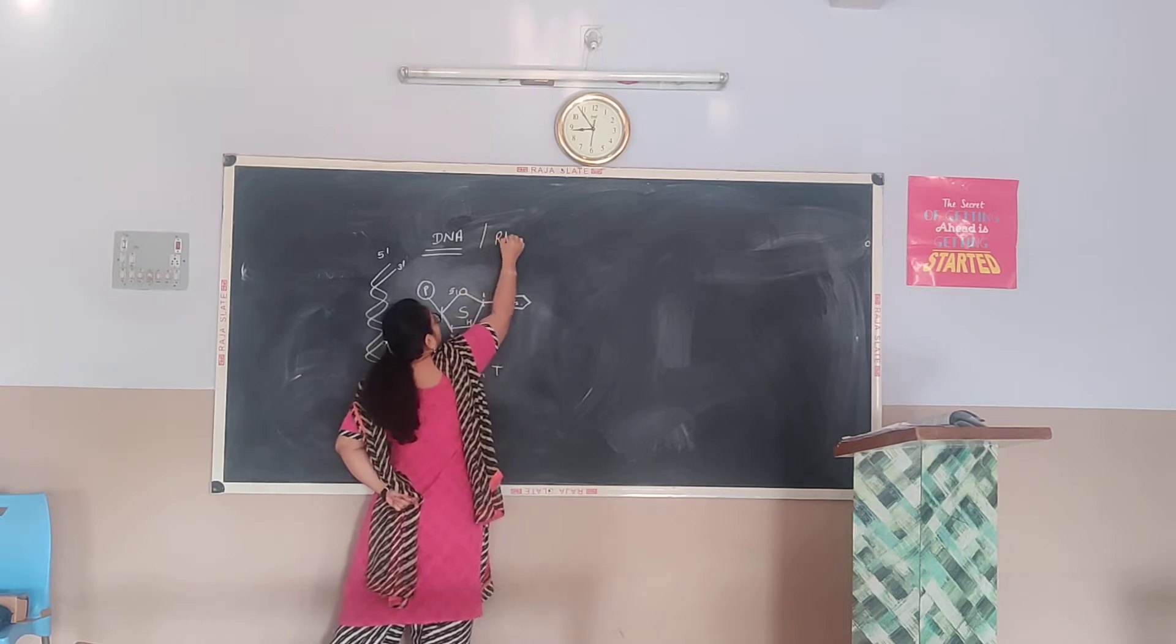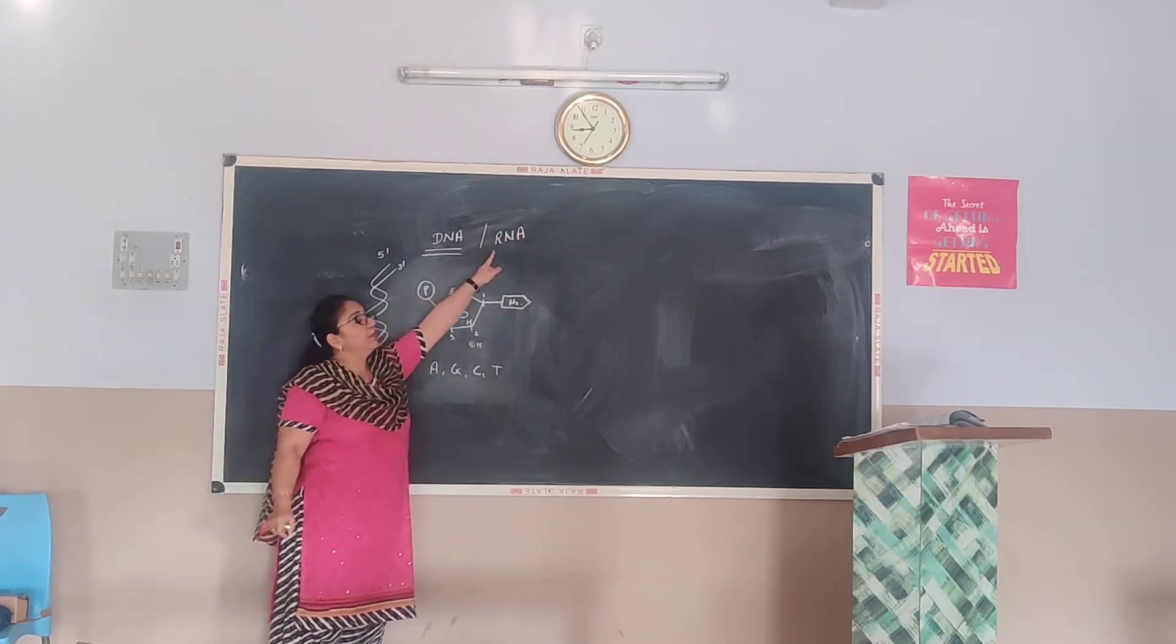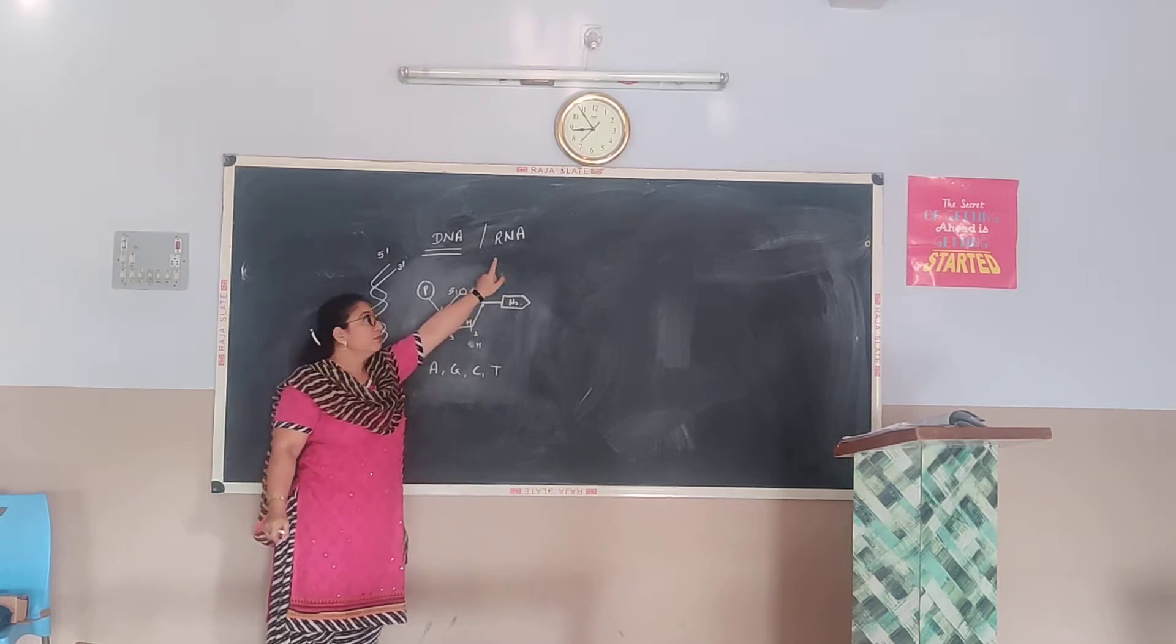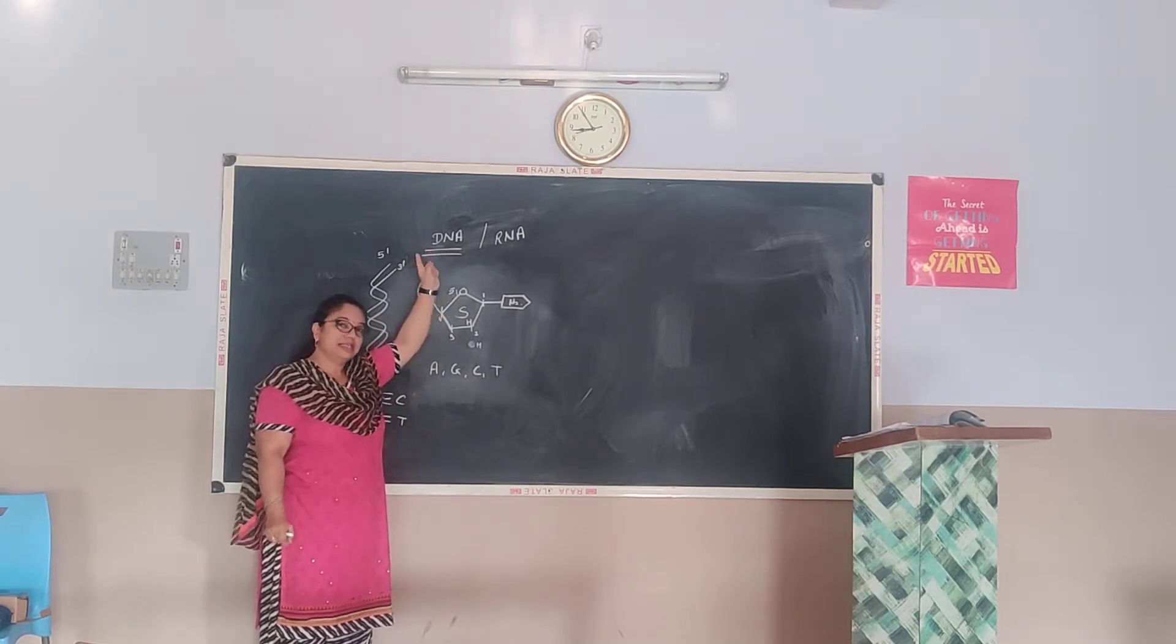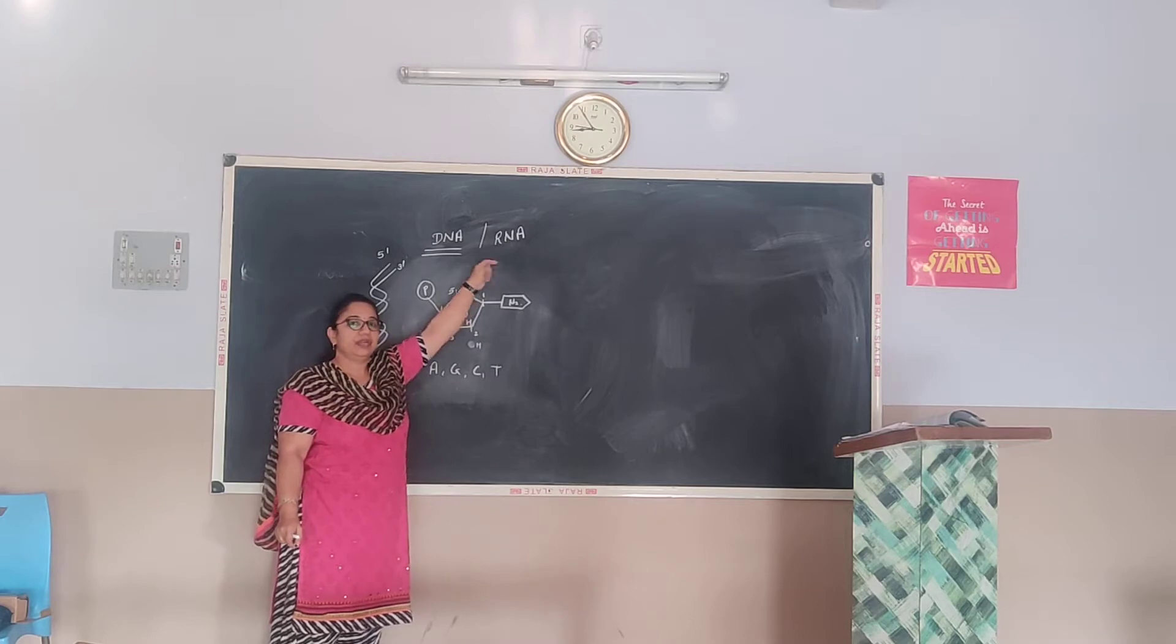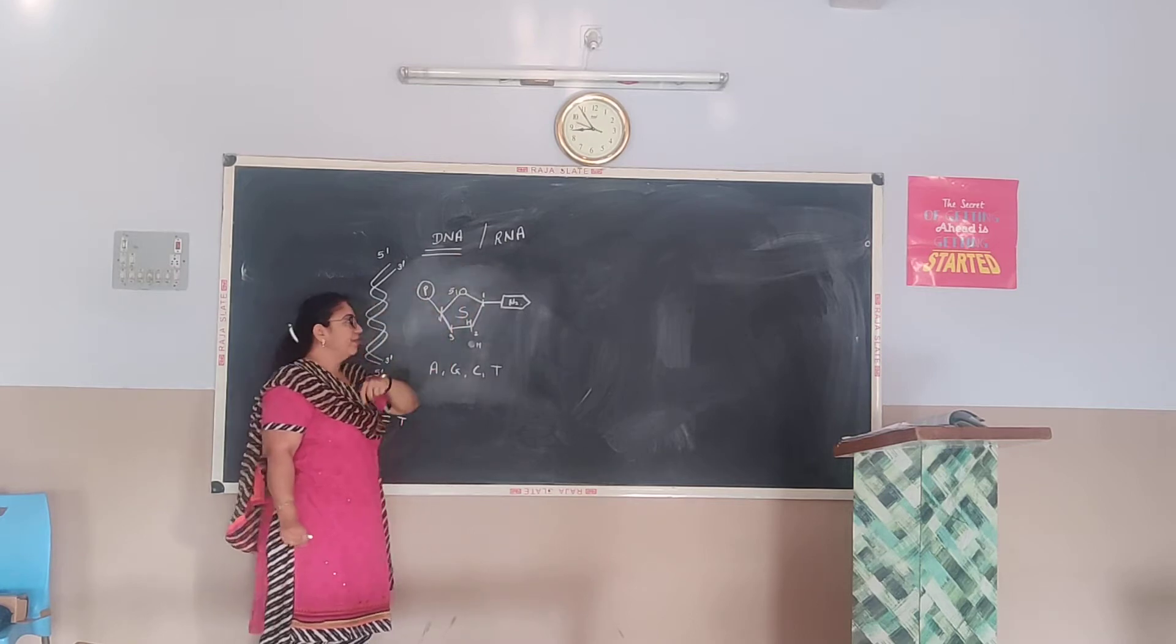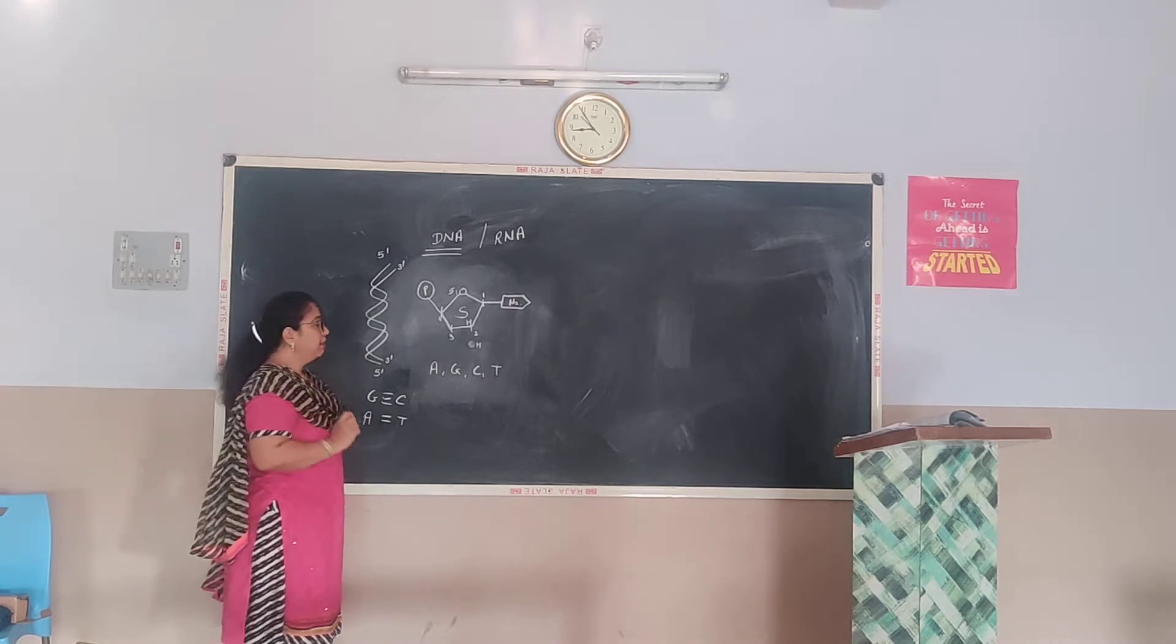So what is RNA? Ribonucleic acid. So difference in structure of RNA and DNA, one oxygen is less in DNA. Okay, one more difference is there. It is single-stranded. This one is double-stranded.